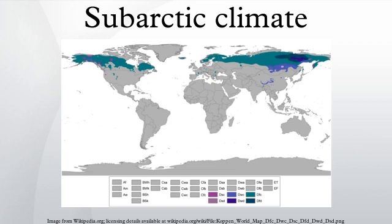Seasonal thaw penetrates from 2 to 14 feet, depending on latitude, aspect, and type of ground. Some northern areas with subarctic climates located near oceans have milder winters and no permafrost, and are more suited for farming unless precipitation is excessive. The frost-free season is very short, varying from about 45 to 100 days at most, and a freeze can occur during any month in many areas.